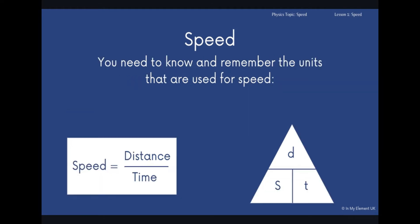You will also need to know the units that are used for speed, and they can vary depending on the object. So you will quite often have meters per second. That will mean that the distance has been measured in meters, the time has been measured in seconds, so therefore the speed is calculated in meters per second.